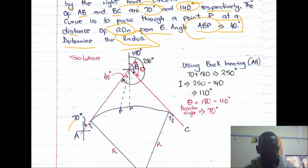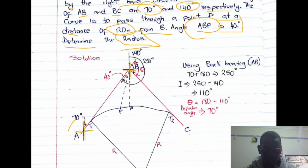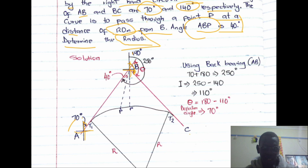Let's go to the solution. I've illustrated this in the diagram. Here we have A, B, and C. Bearings are measured from zero — the bearing of AB is 70° and the bearing of BC is 140°.